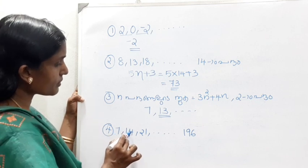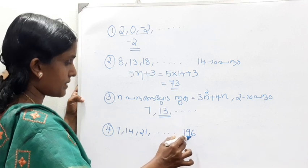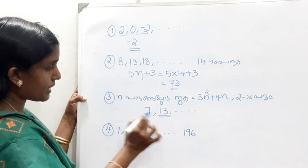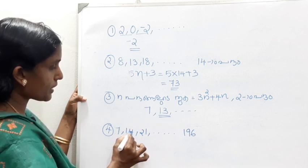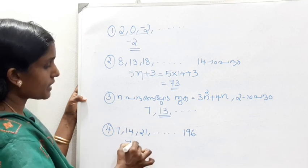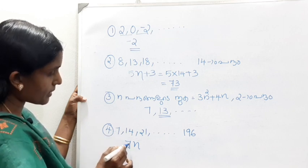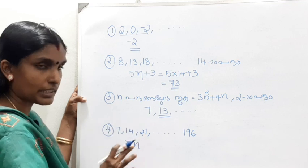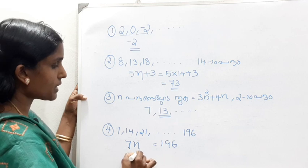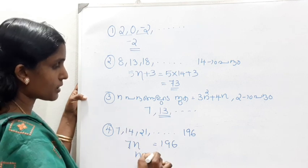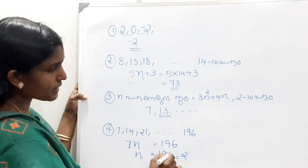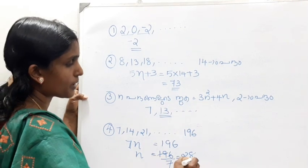4th question: 7, 14, 21 etc. up to 196. That is, how many terms are in this samadhar shreani? The number of terms: 196 divided by 7 gives 28. Options include 86, 7, 8. Our answer is 28.